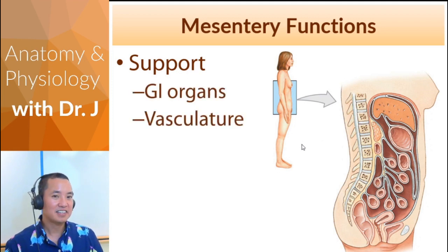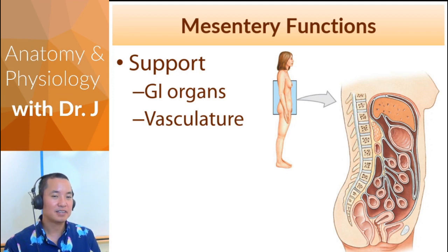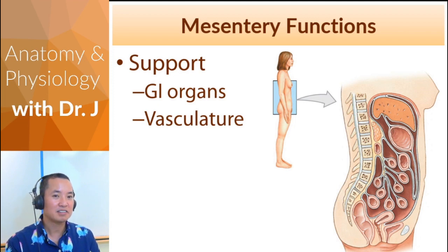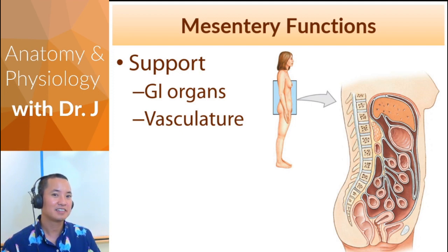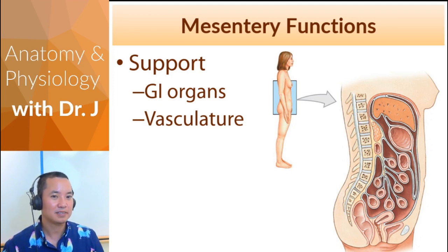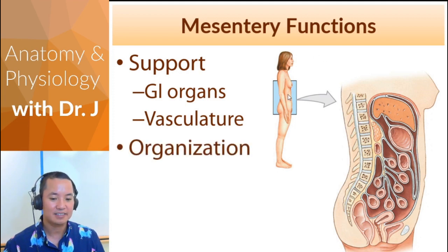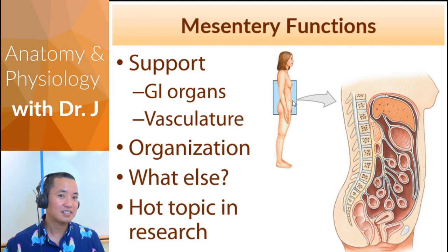The mesentery also supports vasculature. When nutrients are digested in the GI tract, they need to travel to the rest of the body, requiring a lot of blood flow both to and from the GI tract. The mesentery acts like a scaffold — similar to a drop ceiling where wires run through — helping organize all the veins and arteries that supply the GI tract.